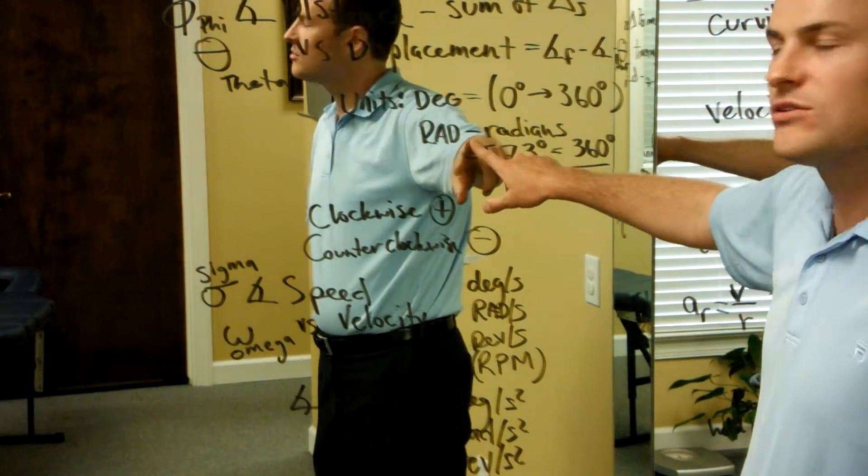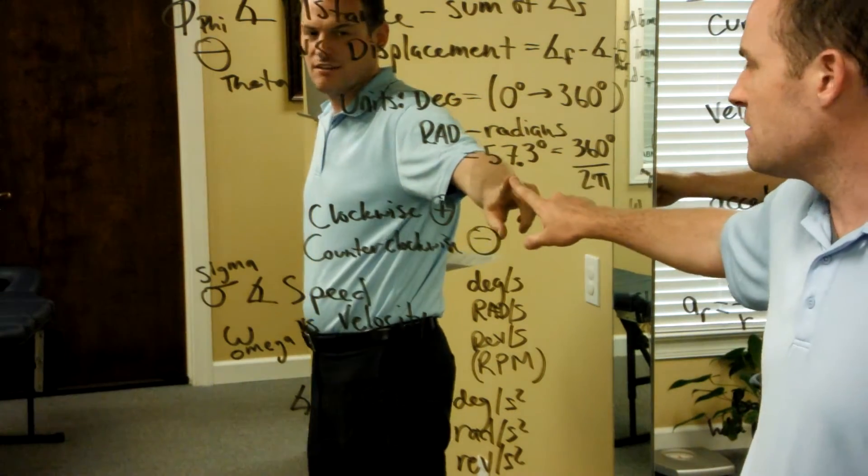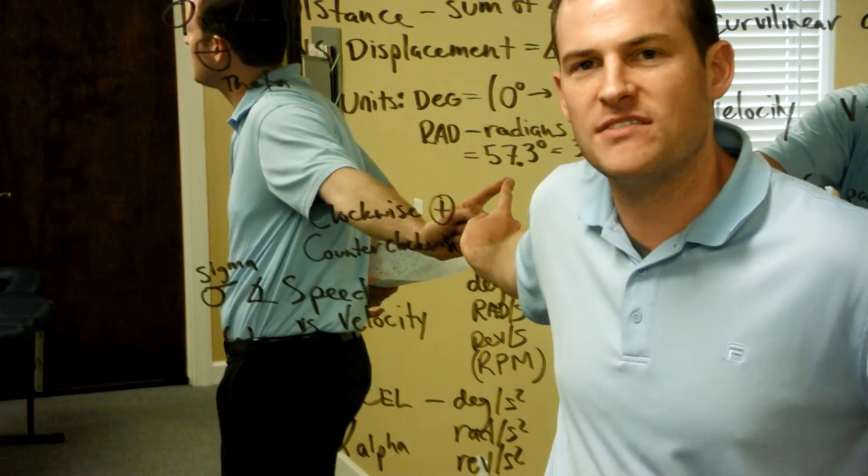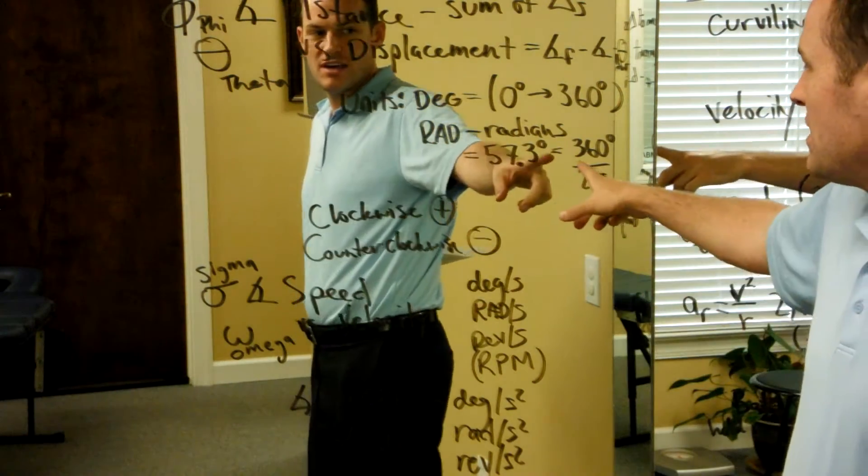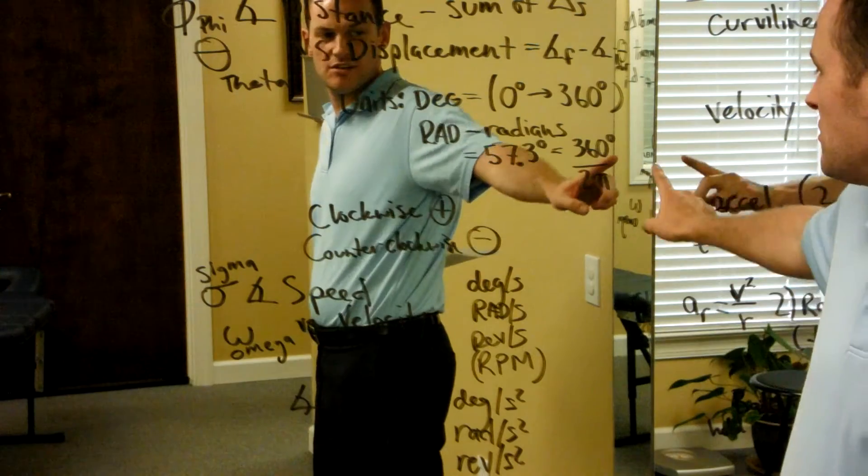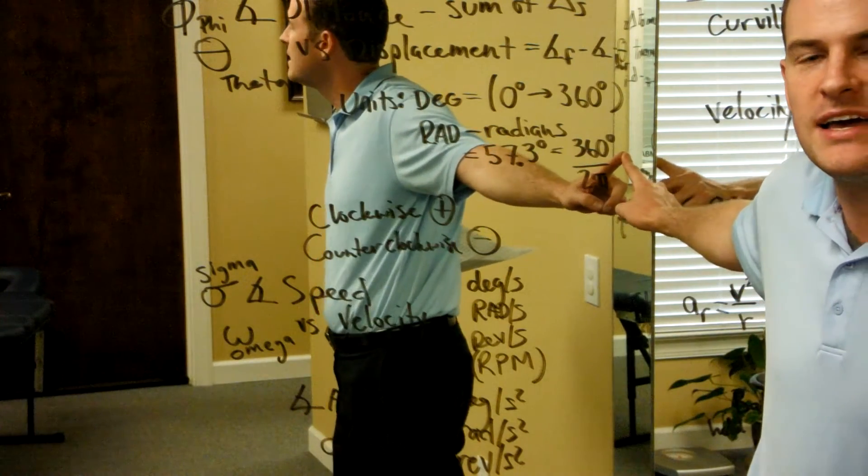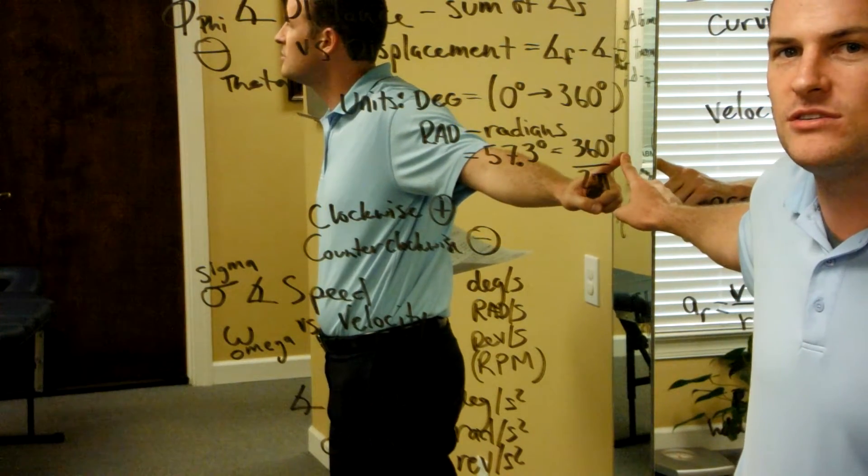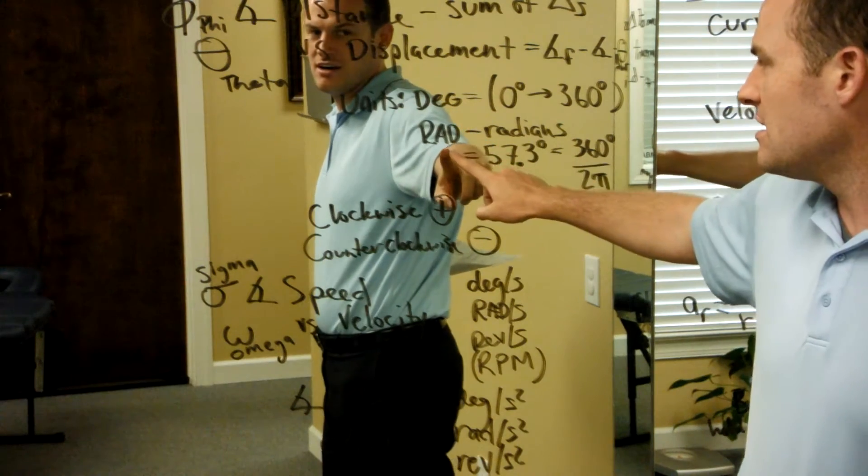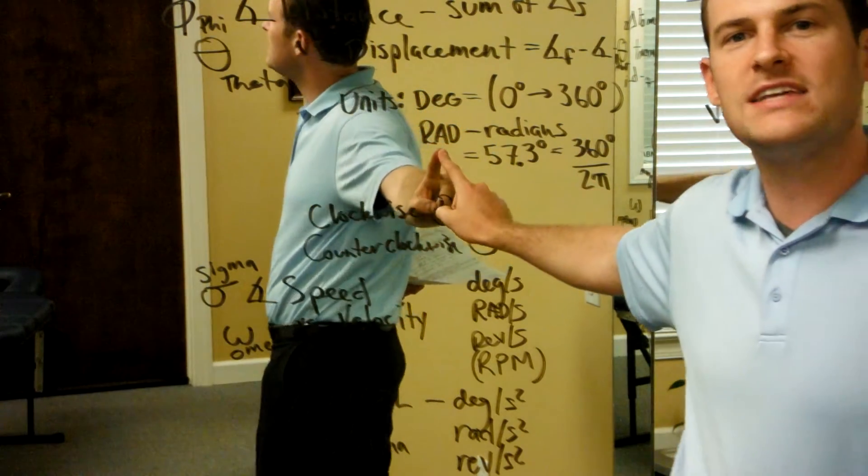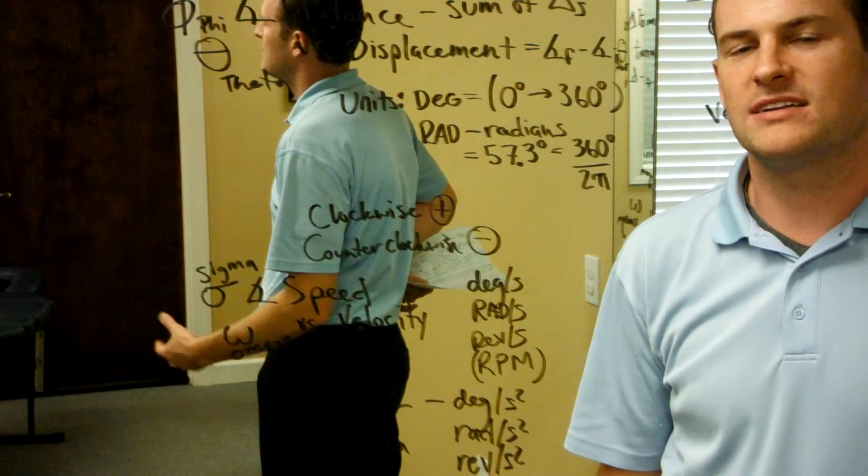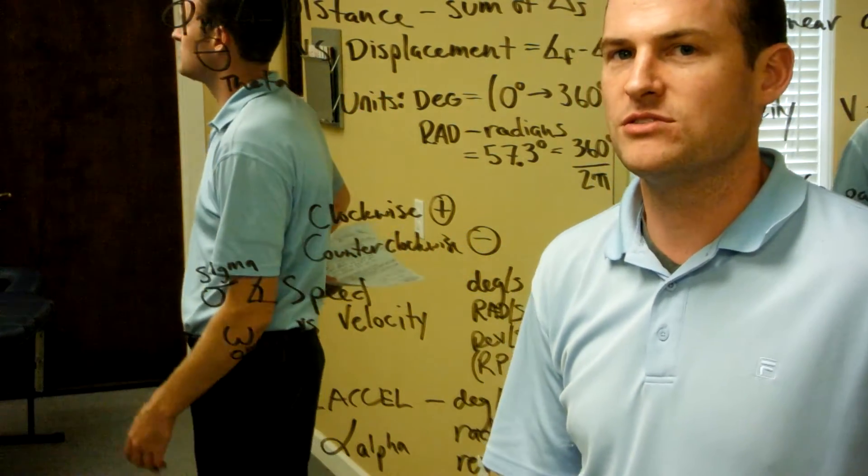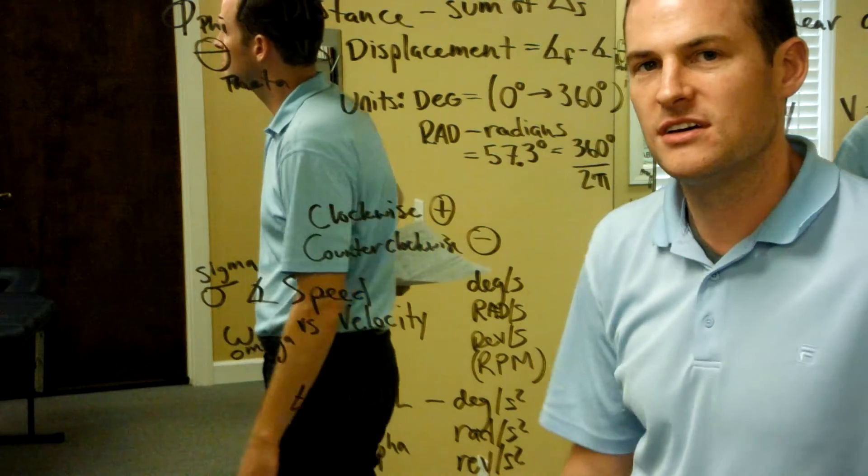Radians, or shorthand RAD, is one radian equals 57.3 degrees. Roughly that is one radian. A single radian is 360 degrees divided by 2 pi. It is mathematically much easier to calculate angular kinematics in radians than it is in degrees or revolutions. But in the context of conversation, degrees and revolutions are sometimes easier for us to discuss.